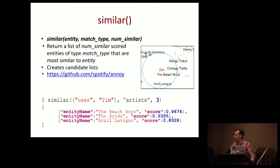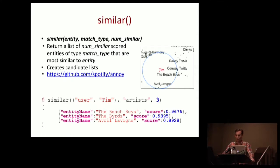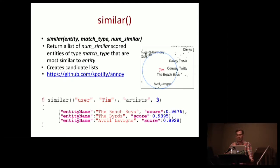Similar is a simple nearest neighbor function — you pass in an entity of interest along with the entity types you're interested in. If we're trying to find three artists I might like, we pass in my entity tuple, the entity type 'artists,' and three for three nearest neighbors, and we get the corresponding nearest neighbors back. We use Annoy as a backend for approximate nearest neighbors lookup — it's been open source for a couple of years on GitHub.